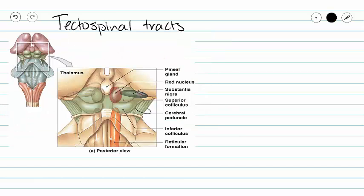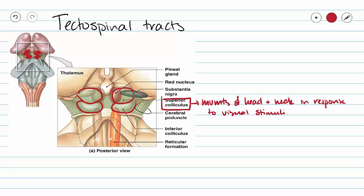Our tectum is our corpora quadrigemina — those four bodies on the posterior side of our mesencephalon. Our superior colliculi are going to be in charge of movements of our head and neck in response to visual stimuli. We talked about our gaze centers in our reticular formation that allowed us to track objects, and those visual orientation reflexes — that's what's going on with our superior colliculus.